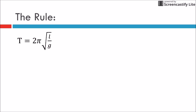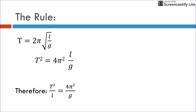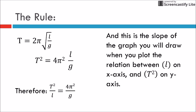The rule T equals 2 pi root L over G. By squaring both sides, T squared equals 4 pi squared L over G, therefore T squared over L equals 4 pi squared over G. This is the slope of the graph you will draw when you plot L on the x-axis and T squared on the y-axis. So G equals 4 pi squared L over T squared.